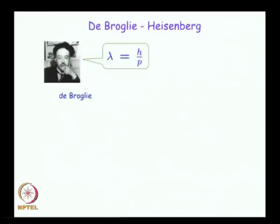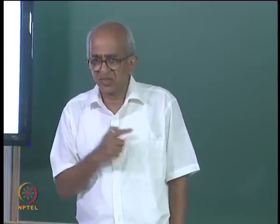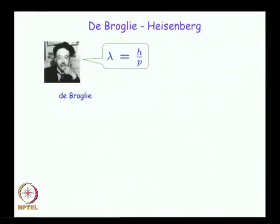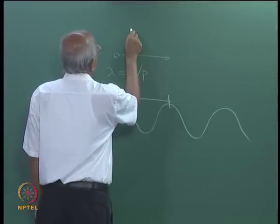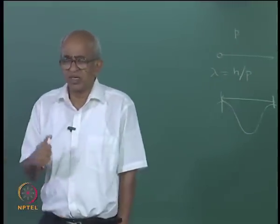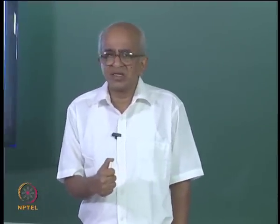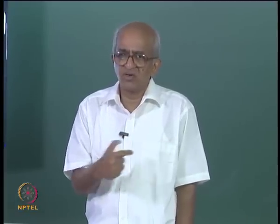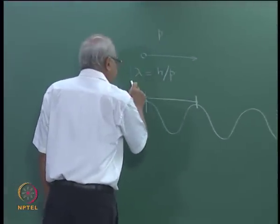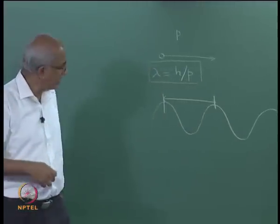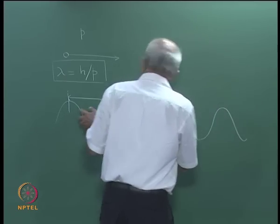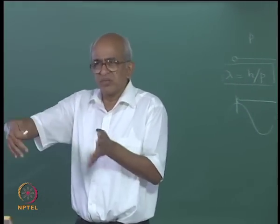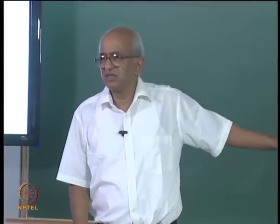One important consequence of the de Broglie relation is Heisenberg's uncertainty principle. To demonstrate how it comes about: imagine a particle moving with momentum p, and I know the momentum precisely. Then I know the wavelength precisely via λ = h/p. The wave will be perfectly periodic, repeating with periodicity λ, extending from minus infinity to plus infinity.